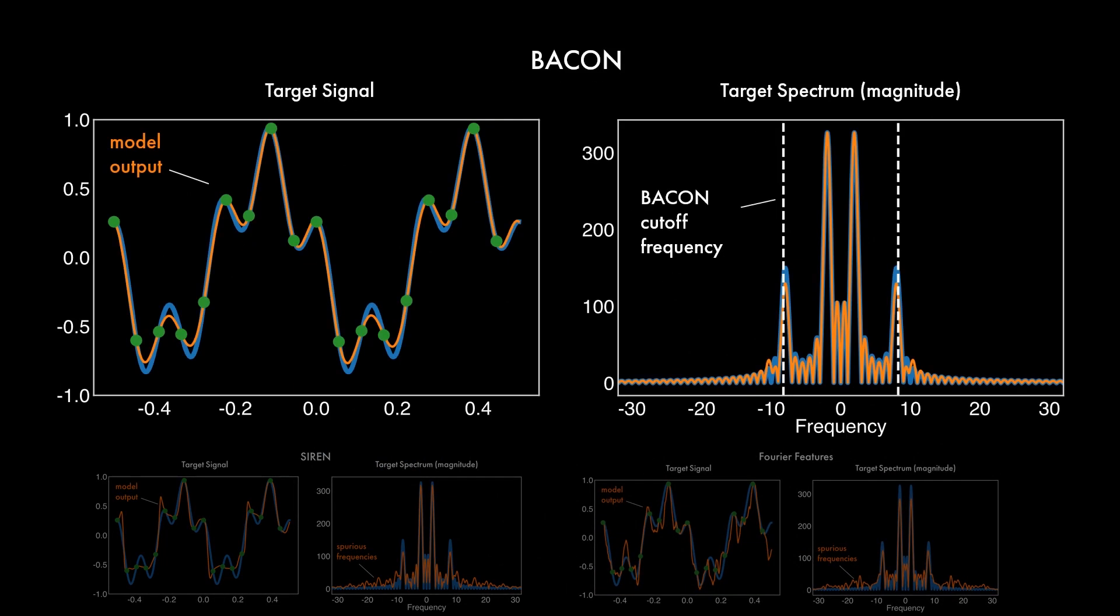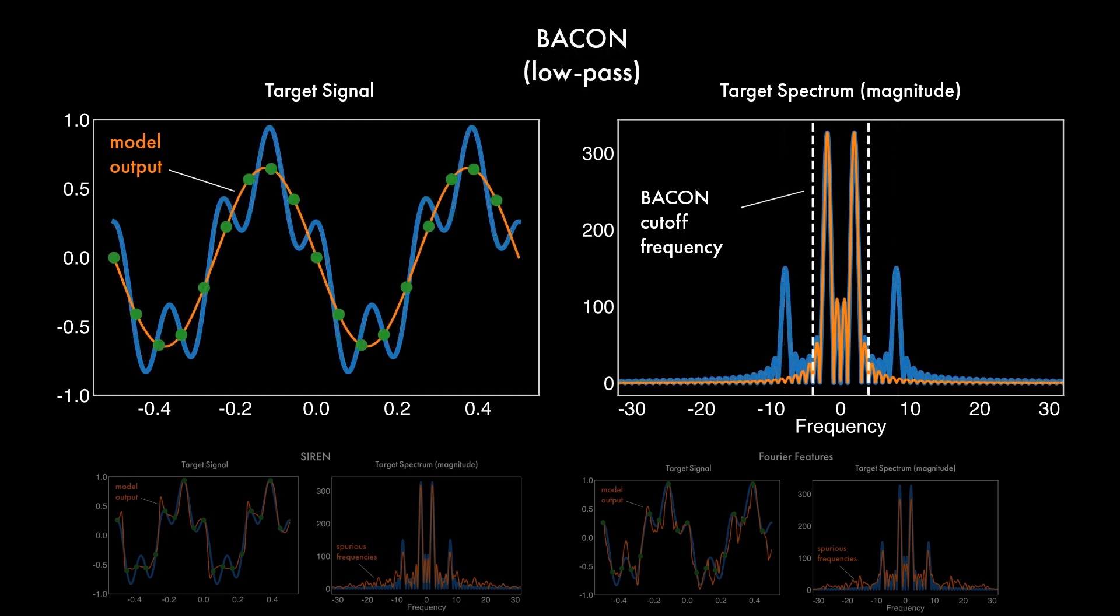We constrain the bandwidth of BACON to the maximum bandwidth of this signal, and we see that it learns band-limited interpolation between the supervised points. We can also perform low-pass filtering by lowering the network bandwidth.